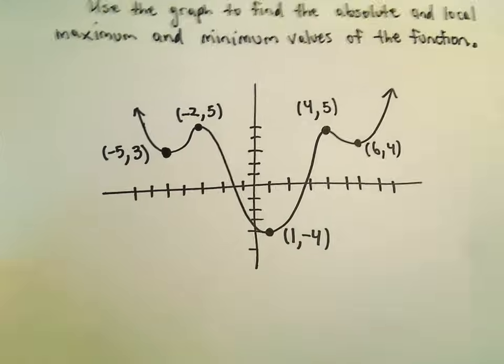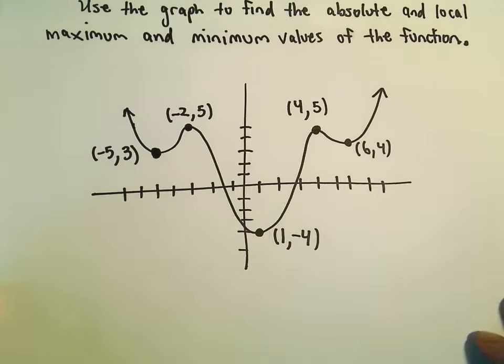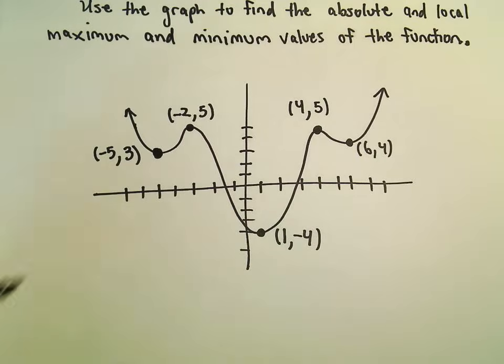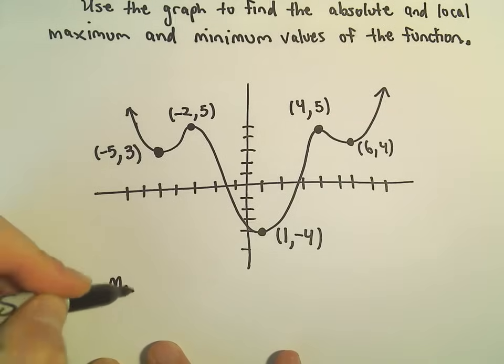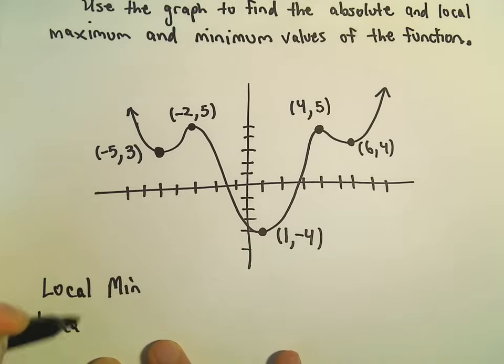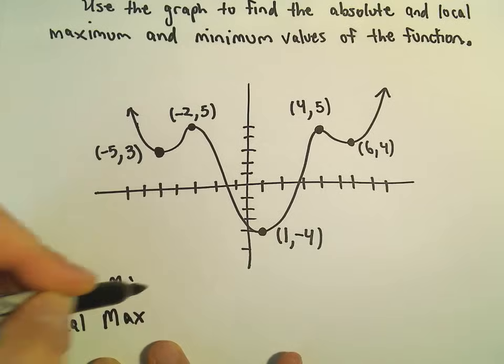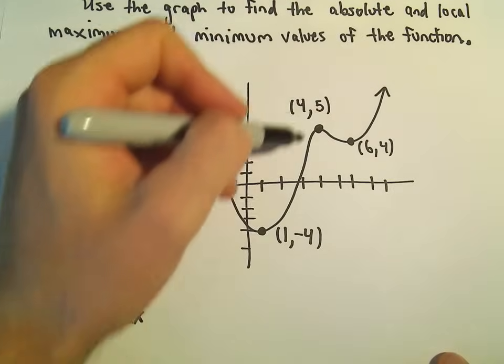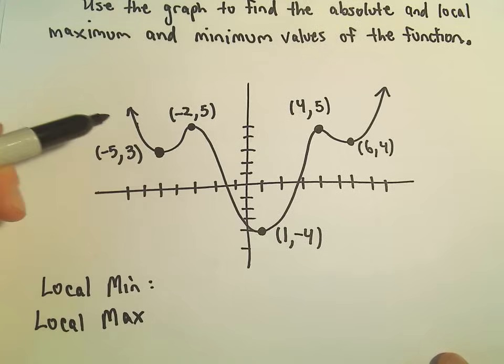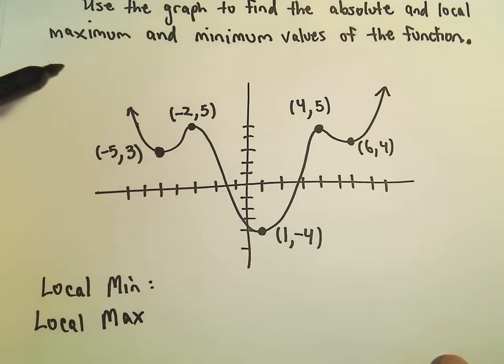Oftentimes people just give the y values, so we can use both notations here. If we want to figure out the local minimums and local maximum values, I just kind of imagine I'm looking at a mountain range off in the distance, obviously kind of a weird mountain range because it keeps going forever.